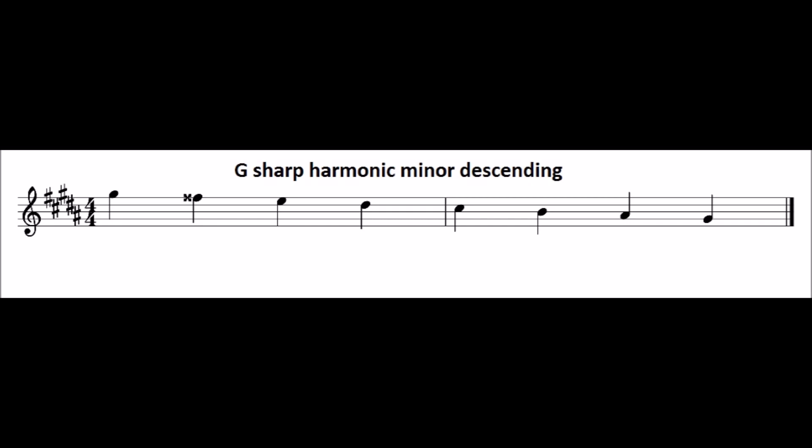And finally, try G-sharp harmonic minor descending. The key signature of G-sharp harmonic minor is five sharps: F-sharp, C-sharp, G-sharp, D-sharp and A-sharp. And harmonic minor scales in general raise the seventh note on the way up and on the way down. So in this case, the seventh note, which is normally F-sharp, needs to be raised to F-double-sharp.